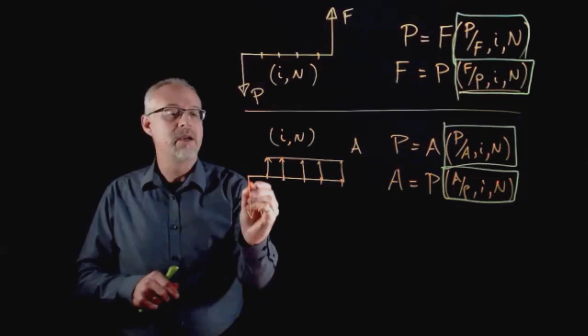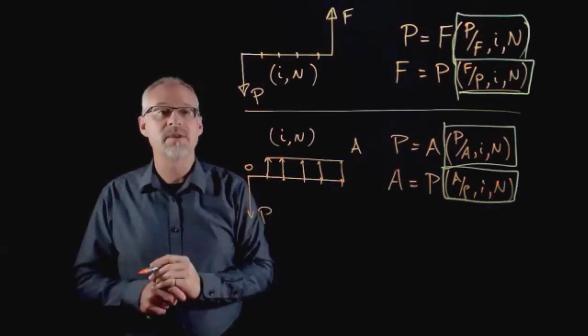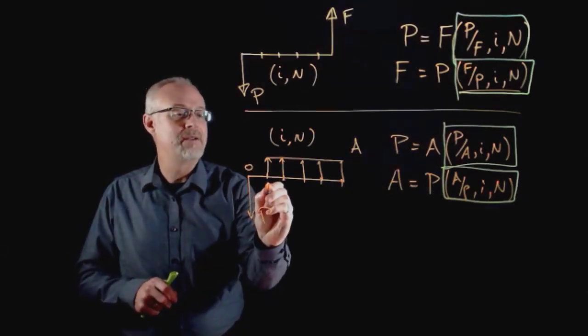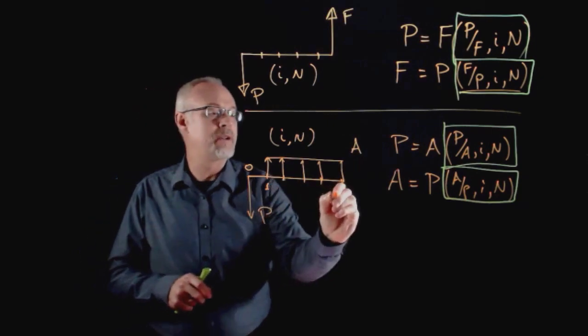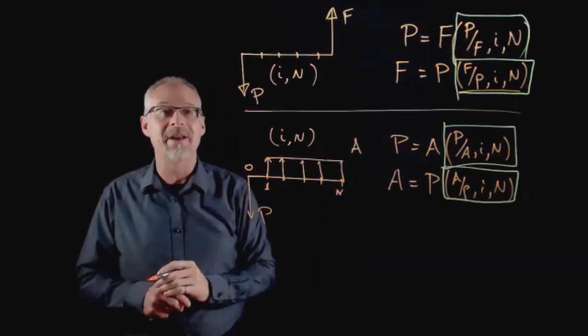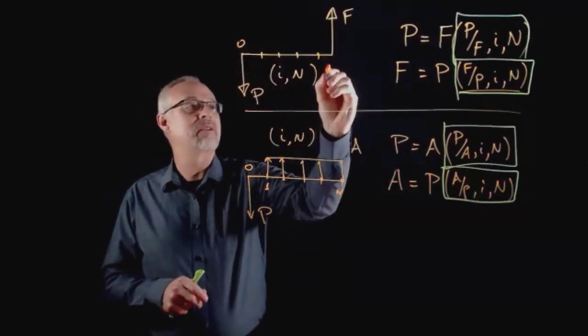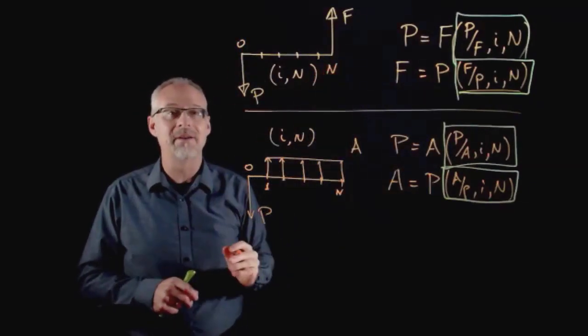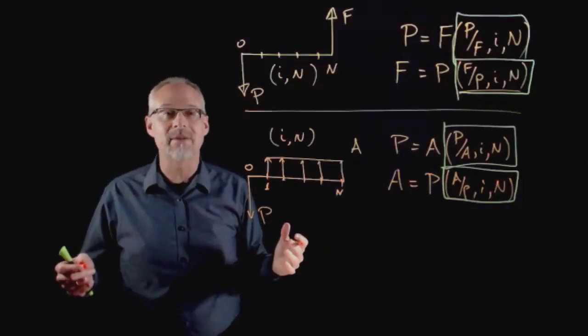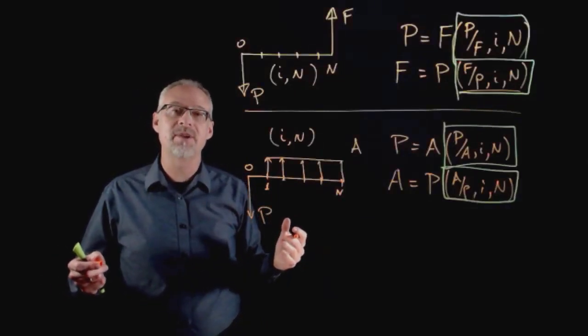What I'm trying to get across is that it's the pattern that's important. In the A given P and P given A, the P occurs at time t equals zero and the A starts at time period one and goes to time period n.